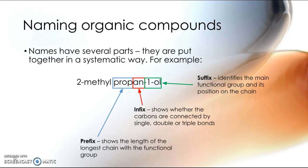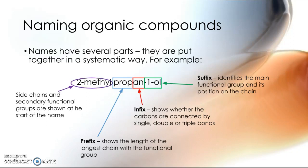And the suffix, ol, tells me that the main functional group, the main reactive part of this molecule, is an alcohol. And the number one tells me that it's in carbon number one of the chain. Now, the 2-methyl bit comes at the front, and that's all the side chain. It's telling me that coming off of the main chain is another group located on carbon two. And methyl tells me that there's one carbon.